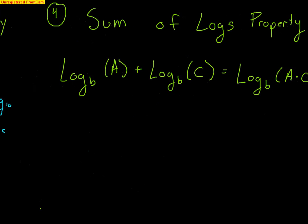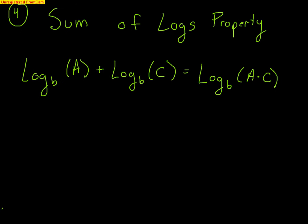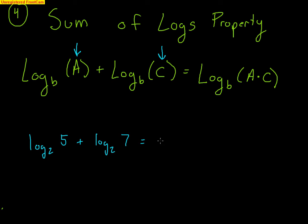The next property is the sum of logs property. It says that log base b of a plus log base b of c equals log base b of a times c. As long as your bases match up, you can combine the addition of two logs into the log of the multiplication of those two values. For example, log base 2 of 5 plus log base 2 of 7 equals log base 2 of 35, because 7 times 5 is 35.